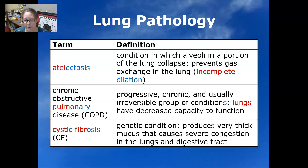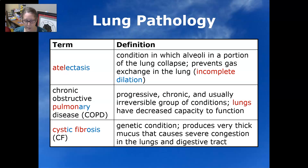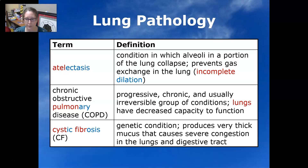In COPD, the lungs have a decreased capacity to function, and there's impaired gas exchange with retention of a lot of carbon dioxide. Cystic fibrosis, abbreviated as CF, is a genetic condition that produces very thick mucus causing severe congestion in the lungs and digestive tract. Part of the genetic mutation means their mucus is not liquid enough, so it gets very thick and sticky.